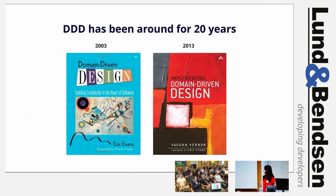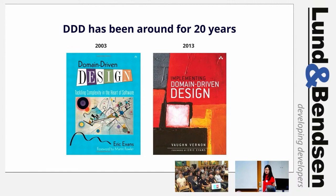DDD has been around for 20 years. It was born in 2003 when Eric Evans wrote the book 'Domain-Driven Design: Tackling Complexity in the Heart of Software' — what we refer to today as the big blue book. It's heavy in all senses. Ten years later, Vaughn Vernon wrote another seminal book, 'Implementing Domain-Driven Design,' bringing DDD into more implementation-based popularity.